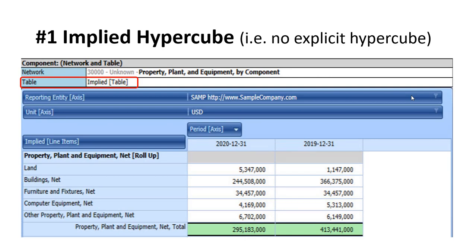Here is an implied hypercube. The term 'table' and 'hypercube' are synonyms as I'm using them. Here you see a structure — an information structure — represented within a network. There is no table, no hypercube explicitly present, so that's what this means. In XBRL, whether there physically exists an explicit hypercube or not, everything exists within a hypercube. This is an implied hypercube. It has no name because it's implied — there isn't physically one there.